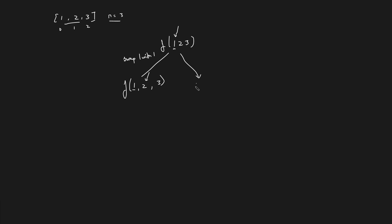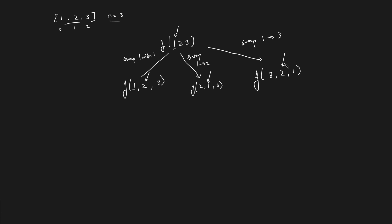The next step is to try having two at the starting position. So I swap one to two, giving us two, one, three. The other option is to bring three to the starting position by swapping one to three, giving us three, two, one at the back. So for the first position, we consider permutations starting with one, two, and three.